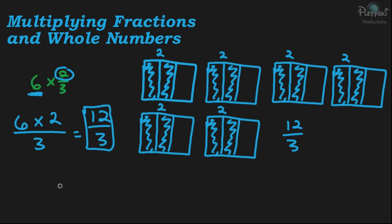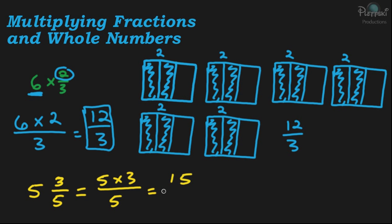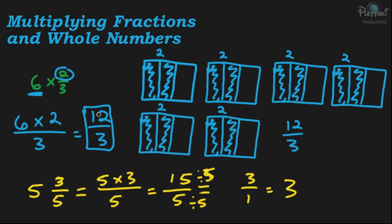Let's do another one. Let's say five times three-fifths. All we have to do is multiply the whole number times the numerator, so we do five times three, and we put that over the denominator, which is going to be fifteen over five. And we can simplify that — fifteen over five: divide the top by five and the bottom by five, and you get three over one, which is simply three. And in our previous problem, twelve over three — twelve divided by three is just four. So we get four and three.